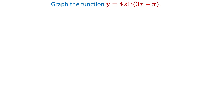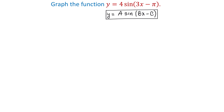In this video we will graph the trigonometric function y equals 4 sine of 3x minus pi. This function has the form y equals a sine of bx minus c, where a is 4, b is 3, and c is pi. To graph this function, first we need to find the amplitude, the period, and the phase shift.